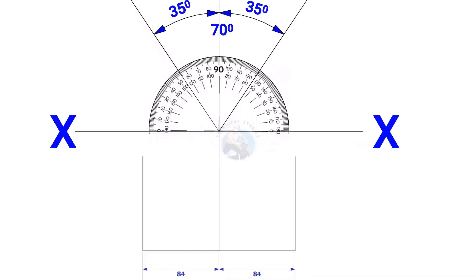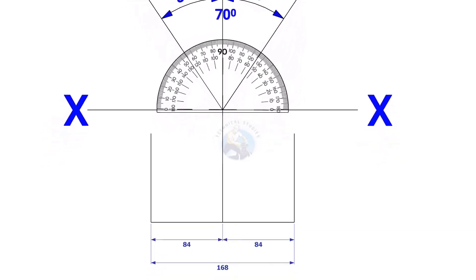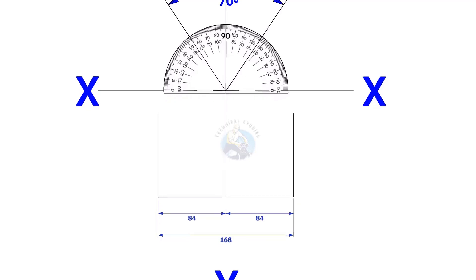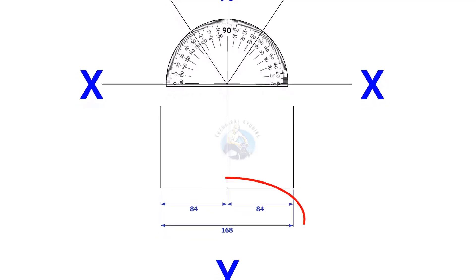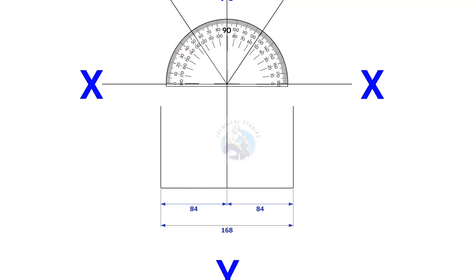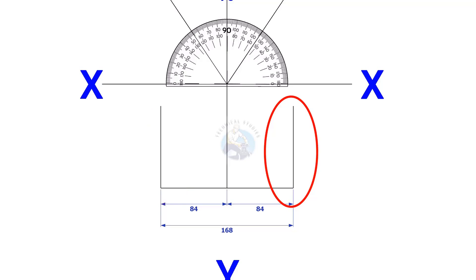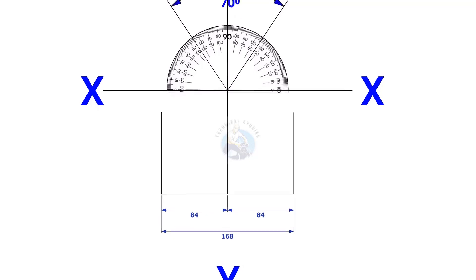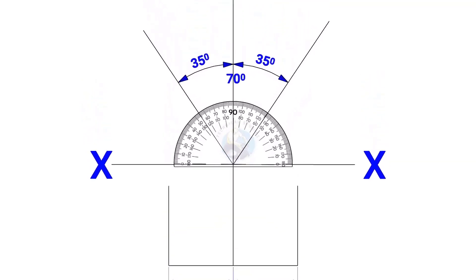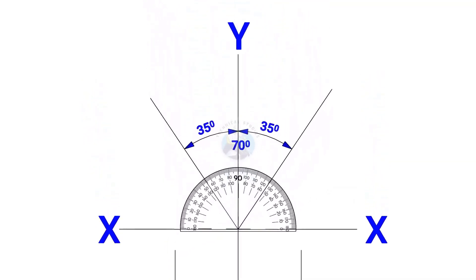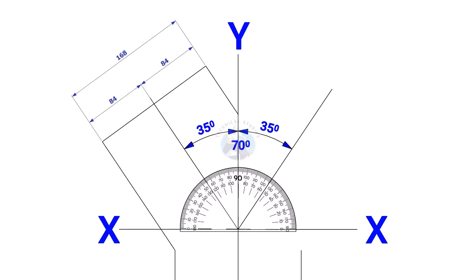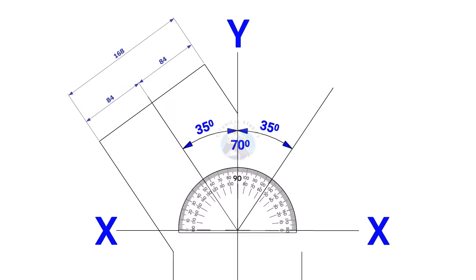Mark 84mm each on both sides of the YY axis — that is the outside diameter of the header. Draw perpendicular lines on these marks, as shown. Draw the branches also, as shown.